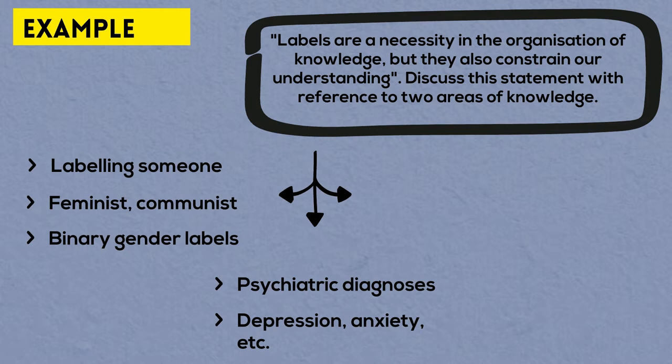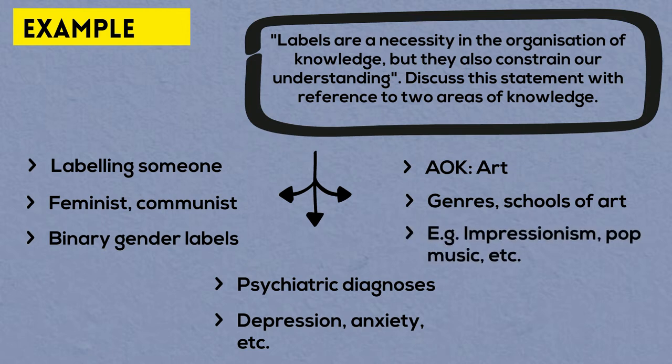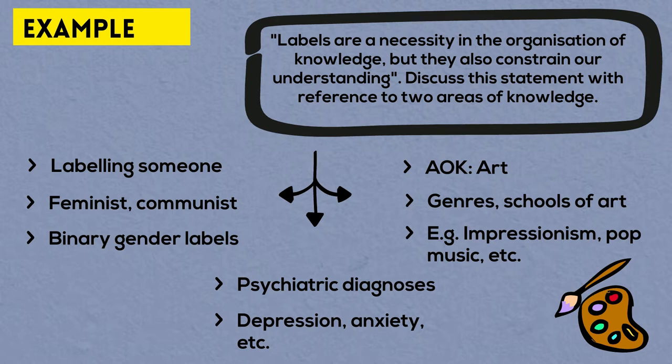If you try thinking about examples related to areas of knowledge, the most obvious one might be the arts, where you might say labels come in the form of genres or schools of art such as impressionism, realism, surrealism, or even pop music, rock music, and so on. And of course in art, it can be argued that the work of art is usually so much larger than the label attached to it, just like any particular person is so much larger and more complicated than any label that the society might have given them.